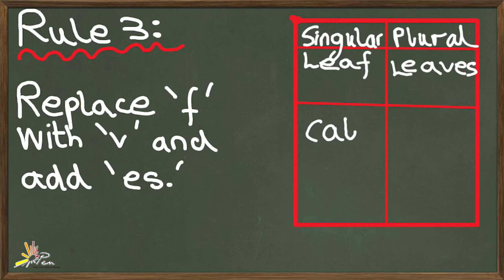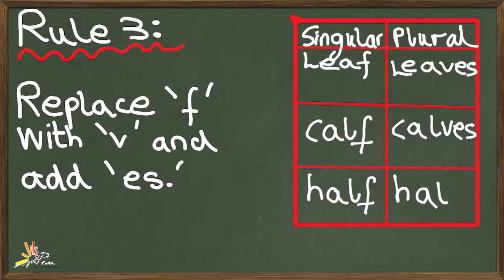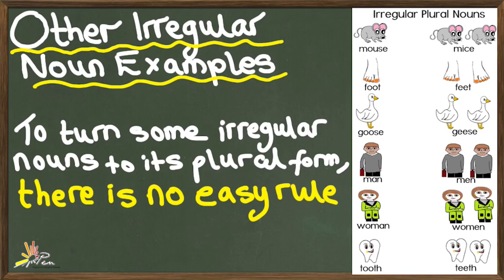Same is the case with calf, which becomes calves, and half, which becomes halves. To turn some irregular nouns to its plural form, there is no easy rule. Mouse is singular and mice is plural, as can be seen in the diagram. Foot is singular and feet is plural.